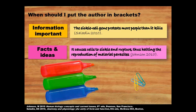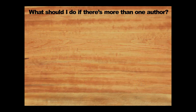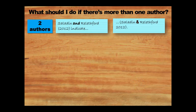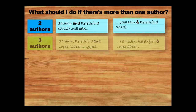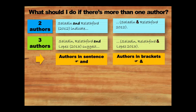In the examples we're looking at here, there's only one author for each work. Students often ask what to do if there's more than one author. For two authors, list both family names in the same order as they appear in the original work. I'd do the same thing for three authors as well. When the authors are part of the sentence, you use the word AND to join the last two names, but when they're in brackets, you use an ampersand instead.